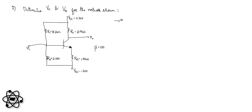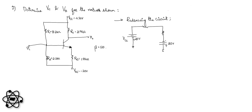Let us try to solve this numerical using the exact analysis, which is the analysis used for the voltage divider — computing the Thevenin voltage and the Thevenin resistance. I will redraw the circuit and compute what is the Thevenin voltage for this particular circuit. The voltage between these two points becomes the Thevenin voltage, V_Thevenian. Here we have VCC and VEE.